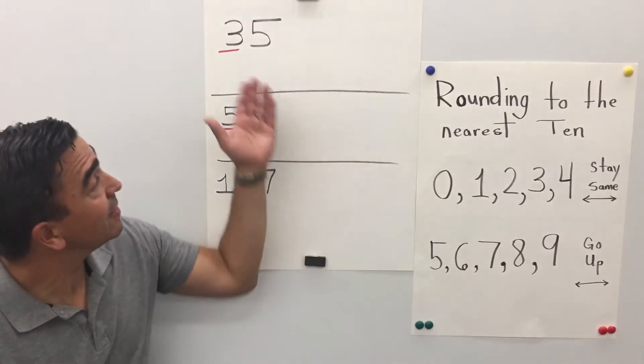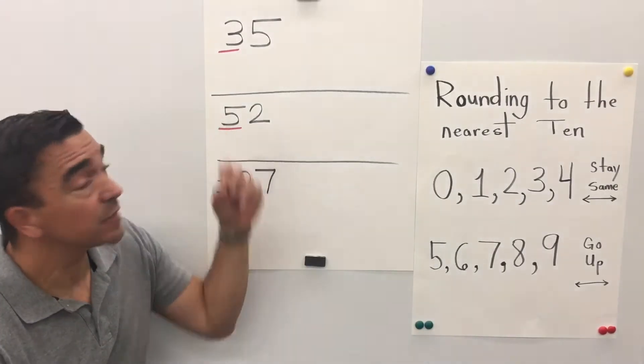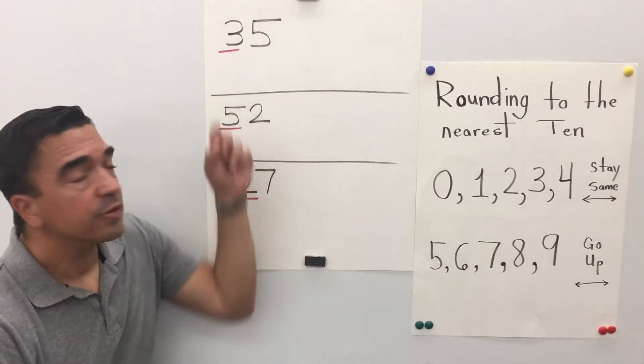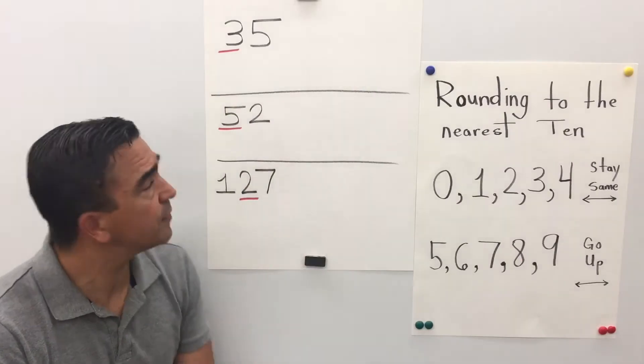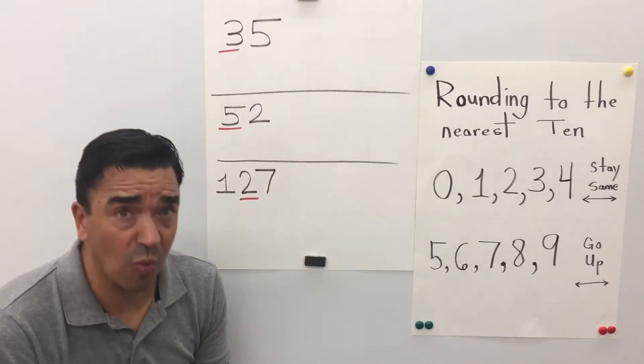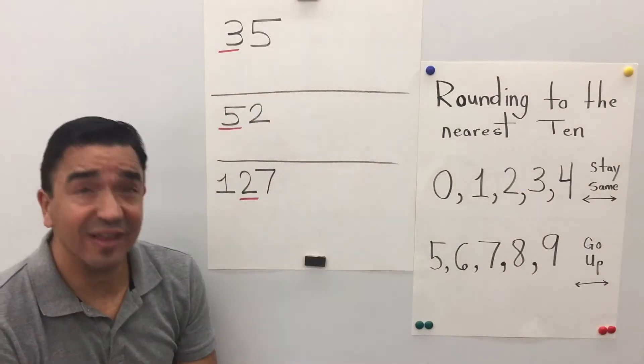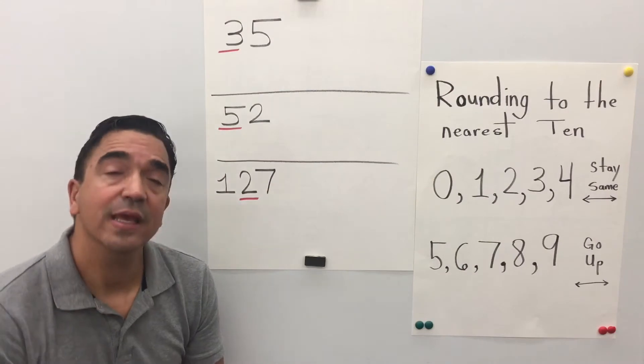Alright. First problem, the number 35. The 3 is in the tens place. The 5 in the ones place is going to tell the 3 what to do. Here's a little trick.